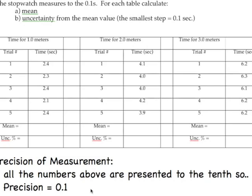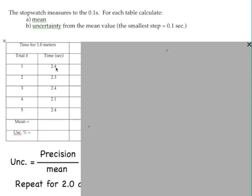And so when we go on to our next slide, that's what we'll use in the equation for uncertainty. We'll put 0.1 on top. If you calculate the uncertainty of this first column, 2.4, 2.3, 2.4, 2.1, and 2.4. So hopefully you remember how to calculate the mean.